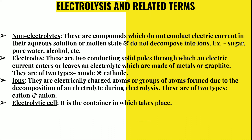What are electrodes? They are two conducting solid poles through which an electric current enters and leaves the electrolyte. These electrodes are made up of metals or graphite and are of two types: anode, which is the positive electrode, and cathode, which is the negative electrode. Ions are electrically charged atoms or groups of atoms formed due to the decomposition of an electrolyte during electrolysis; they are of two types — cation (positive) and anion (negative). The electrolytic cell is the container in which the electrolysis process takes place.